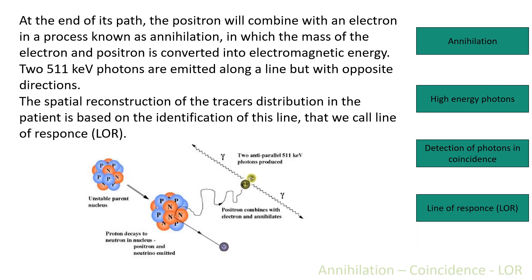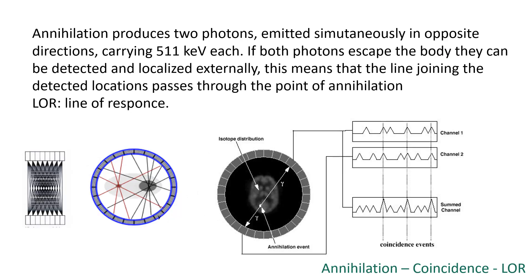This is the scheme of annihilation. At the end of its path, the positron will combine with an electron in a process known as annihilation, in which the mass of the electron and of the positron is converted into electromagnetic energy. The two 511 keV photons are emitted along a line but with opposite directions. The spatial reconstruction of the tracer distribution in the patient is based on the identification of this line, which we call the line of response.